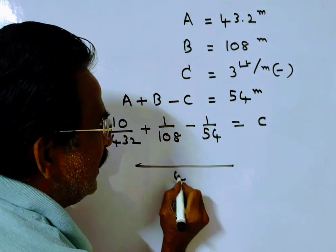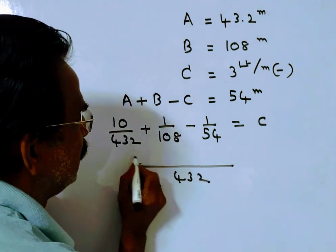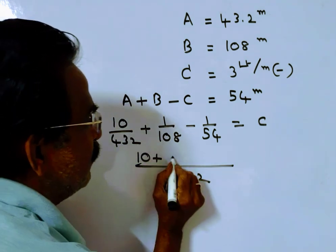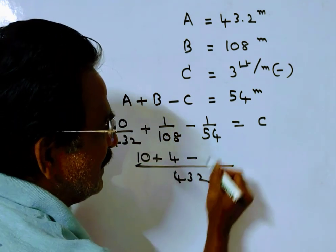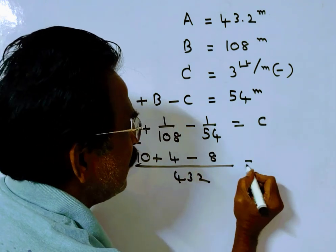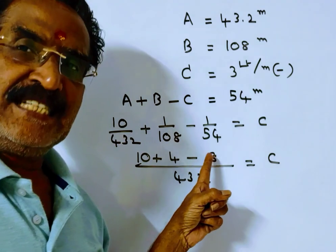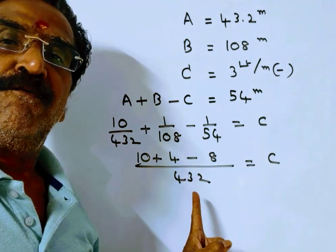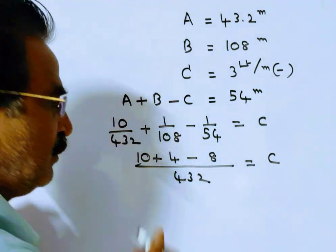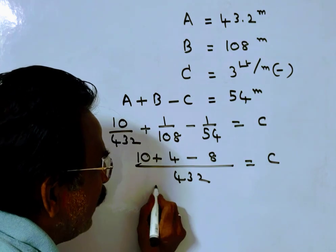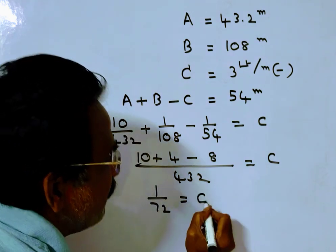This is LCM 432. 10 plus 4 minus 8 is equal to C. 14 minus 8 is 6, 6 by 432. So C is equal to 1 by 72.